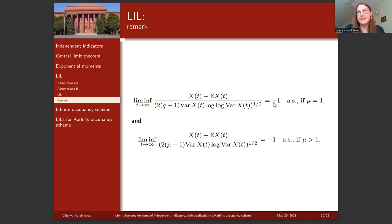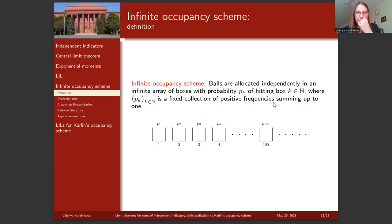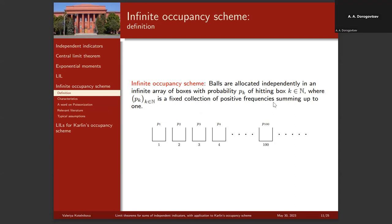We also proved the corresponding result for lower limits: the lower limit equals minus one. This is the classical form. Now let me show how this law of iterated logarithm can be applied to the infinite occupancy scheme.